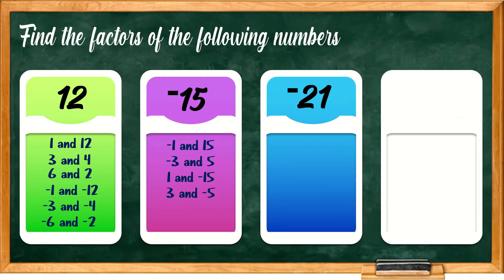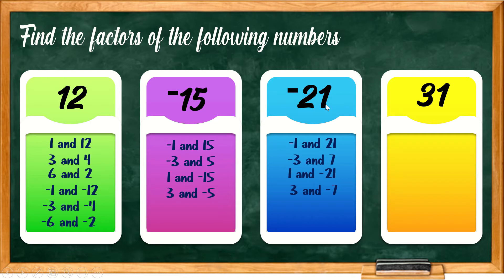Next, negative 21. Since this is negative, we again consider positive times negative pairs: negative 1 times positive 21, negative 3 times positive 7, positive 1 times negative 21, and positive 3 times negative 7. Last number, positive 31. Its factor pairs are positive 1 and positive 31, and negative 1 and negative 31. Since 31 is a prime number, those are its only factor pairs. This activity relates to our lesson today: finding the factors of a given quadratic equation.